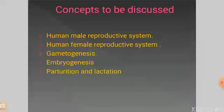This is Chapter 3: Human Reproduction. The concepts to be discussed include the human male reproductive system, human female reproductive system, gametogenesis, embryogenesis — which covers the synthesis of the embryo from the zygote and its growth — and lastly, parturition and lactation. These are the few concepts we are going to discuss under this chapter.